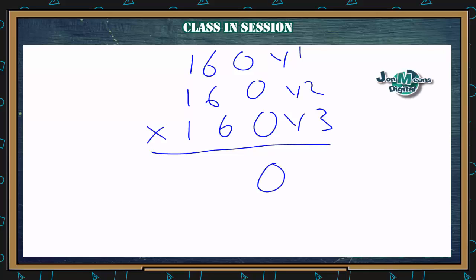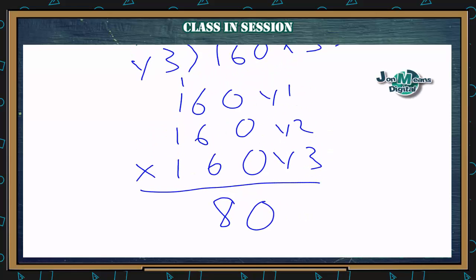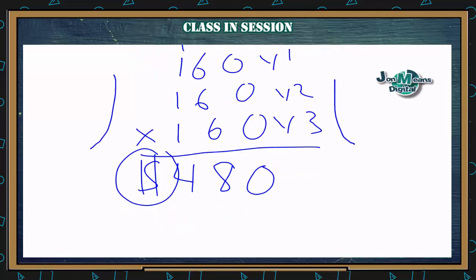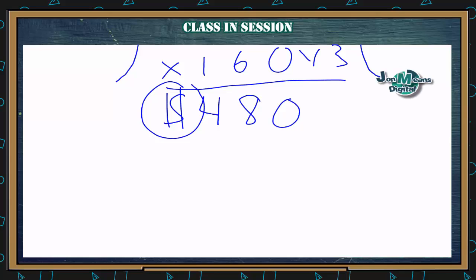Which is the same as doing 160 + 160 + 160. Year one, year two, year three: 0 plus 0 plus 0 is 0, 6 plus 6 plus 6 gives you 18, 1 plus 1 plus 1 plus carry gives you 4 — so 480. There are a bunch of ways you can get it, just pick one and simplify the best way you know how. Let me know if you have any questions on anything else you see inside this problem.